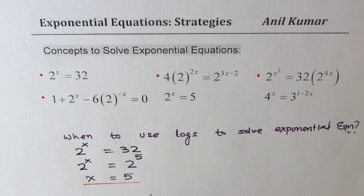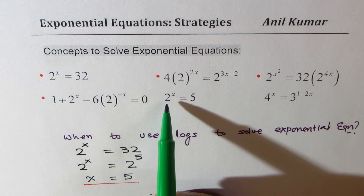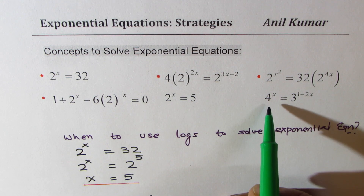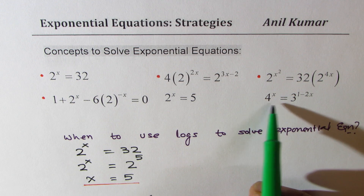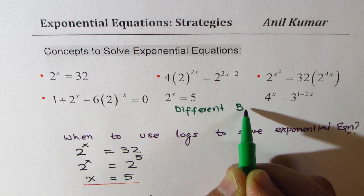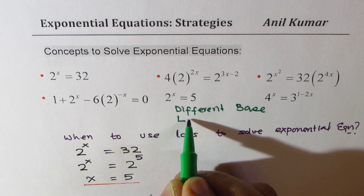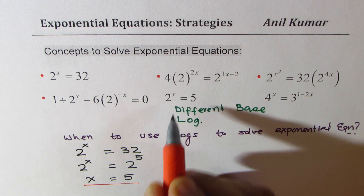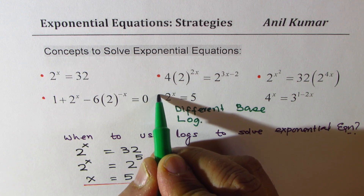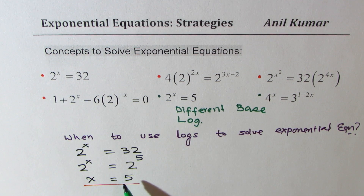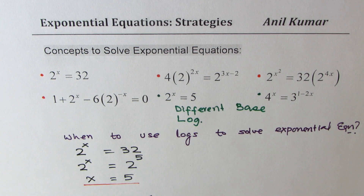Now let's look at the last two questions. We have 2 to the power of x equals 5 — the base is 5, which could be written as 5 to the power of 1. And we have 4 to the power of x and 3 to the power of something — clearly different bases. So in these two equations we have different bases, and to solve them we have to use logarithms. Whenever the bases are different, we have to use logarithms. We will see how to use logarithms to solve the last two examples.